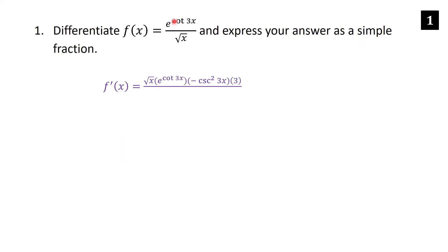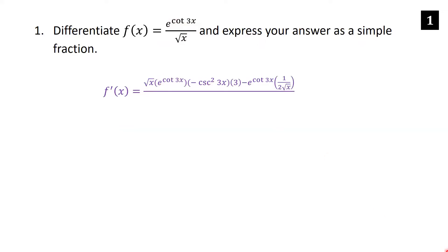The outer function is e to the cotangent 3x. The derivative of e to something is e to something, so it's e to the cotangent 3x. We then take the derivative of cotangent 3x, which is minus cosecant squared 3x. Finally, we take the derivative of 3x to get 3. So we did the denominator times the derivative of the numerator, minus the numerator times the derivative of the denominator, which is 1 over 2 root x.